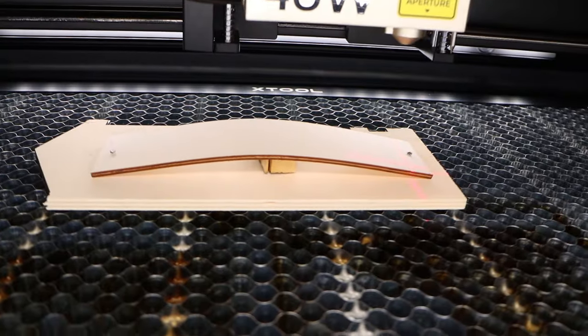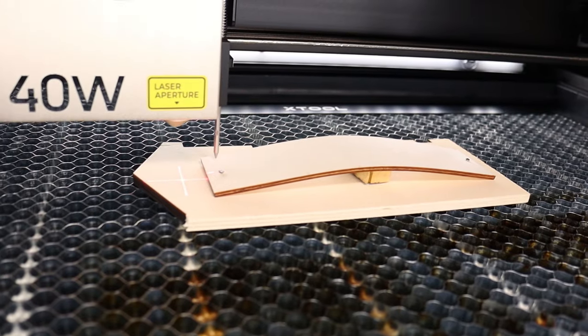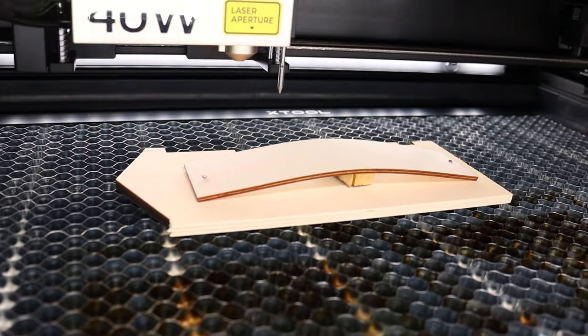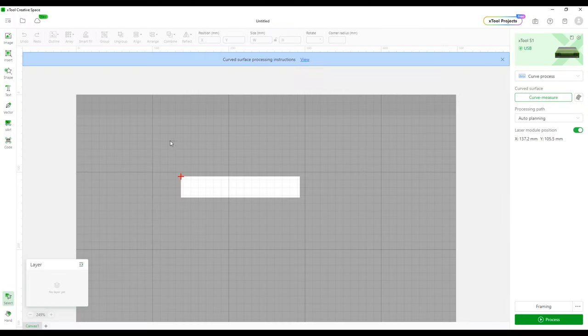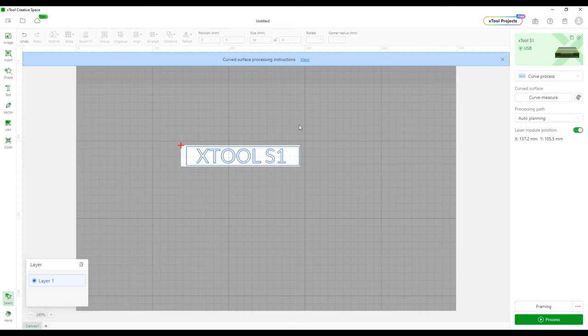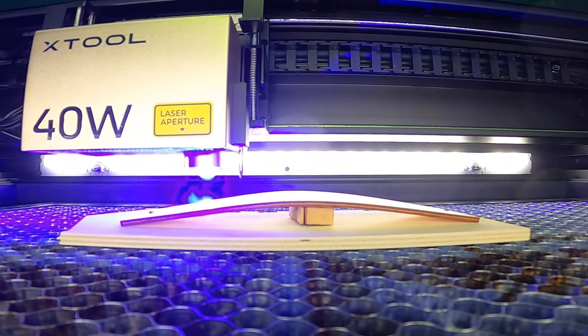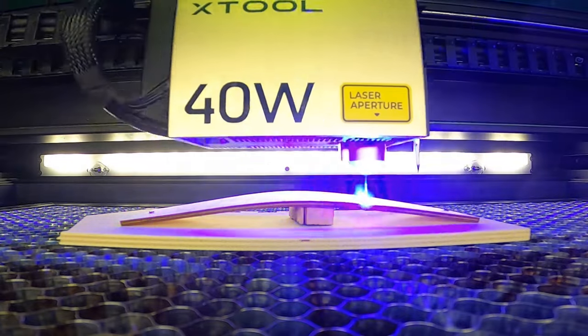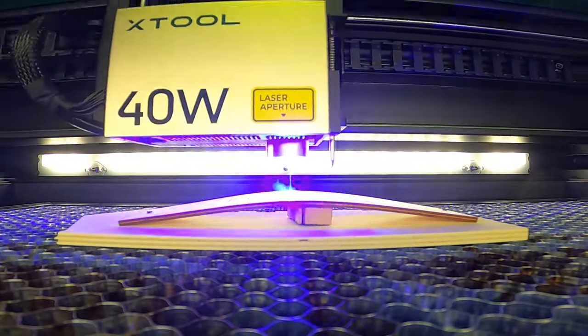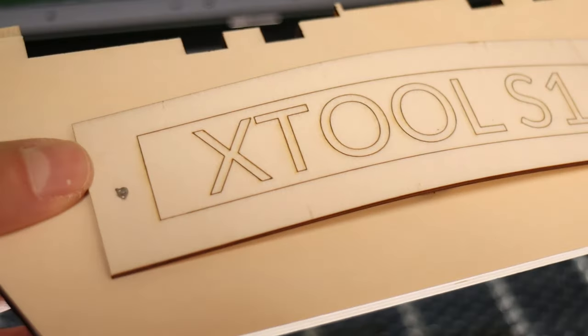Lastly, let's test the curved surface engraving feature which is supported in the XCS software. With the focusing probe, you can measure a grid of points on the object you want to engrave. The software then converts those points into a 3D surface, and the X-Tool S1 then automatically adjusts the focus distance in real time to keep the laser in perfect focus across the entire object. Very clever feature for engraving cups, mugs, spoons, and odd-shaped flasks. As you can see, the entire engraving was done in perfect focus.